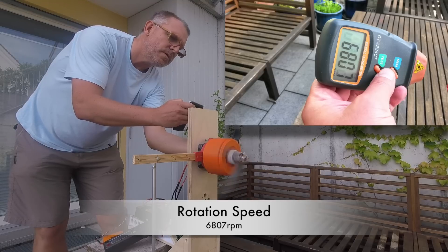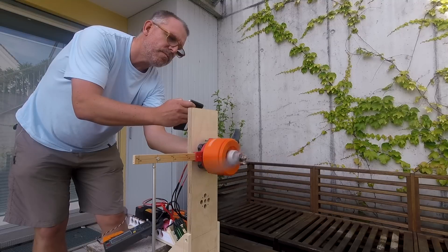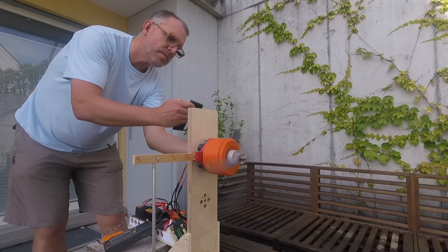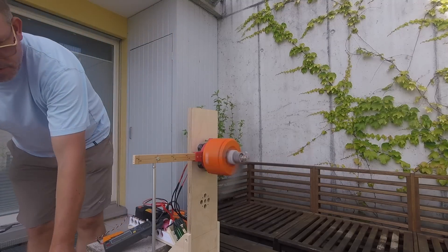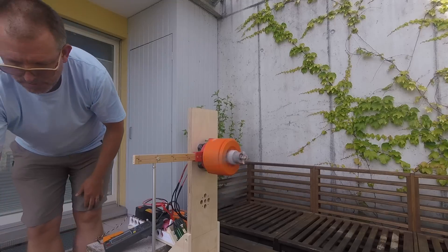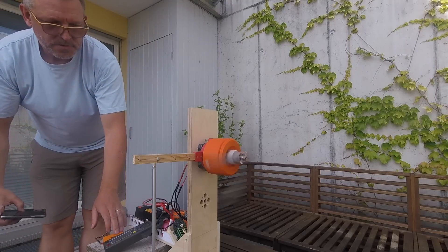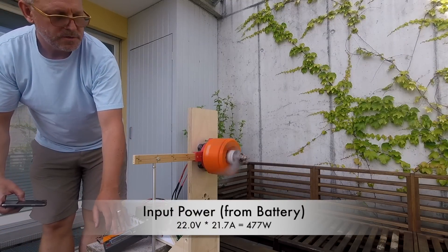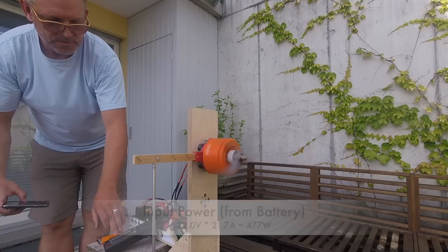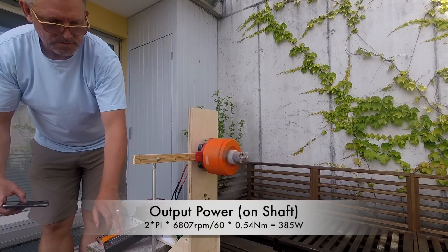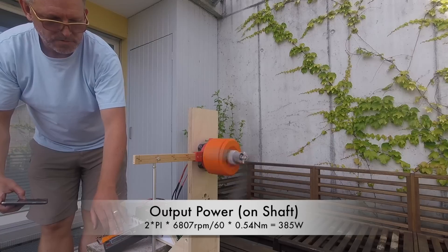The copper winding is a bit different compared to the first version. It only has 3 turns instead of 4 but the wires are much thicker. Overall it has 20% more copper. The input power from the battery is 480 watt.